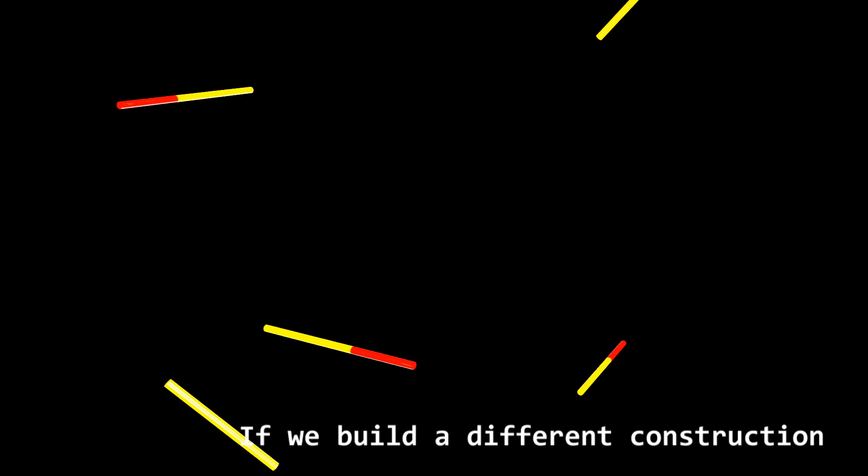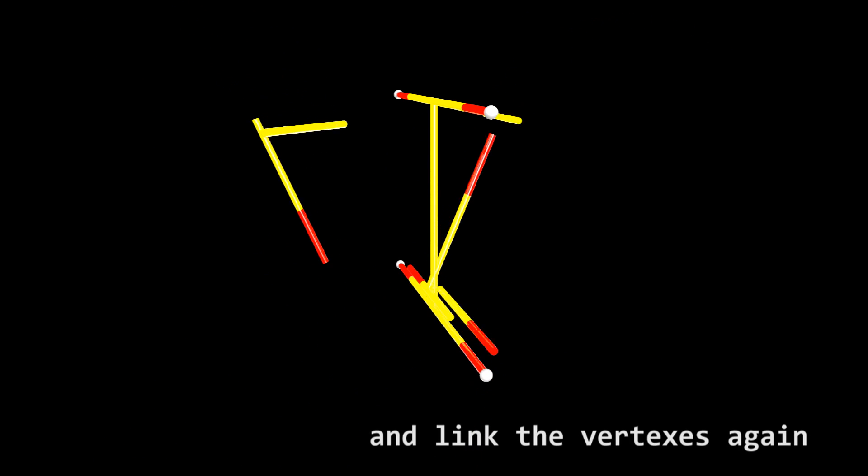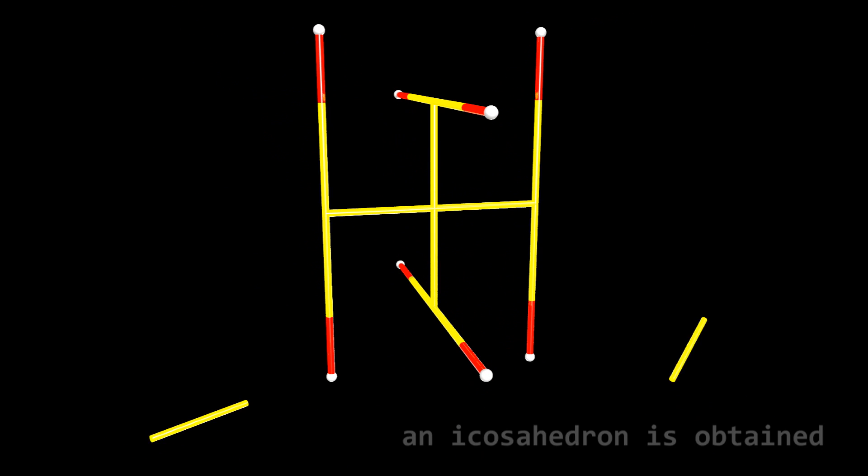If we build a different construction with the same golden pieces and link the vertices again, an icosahedron is obtained.